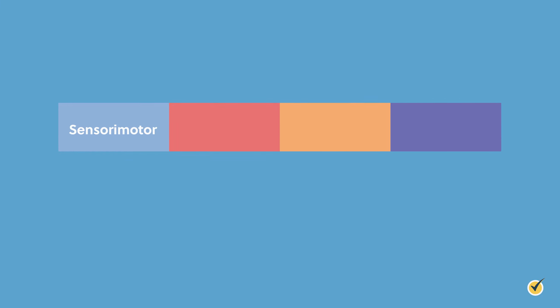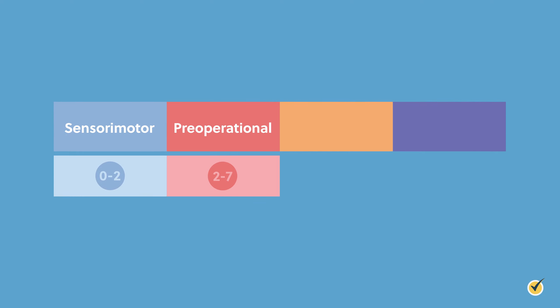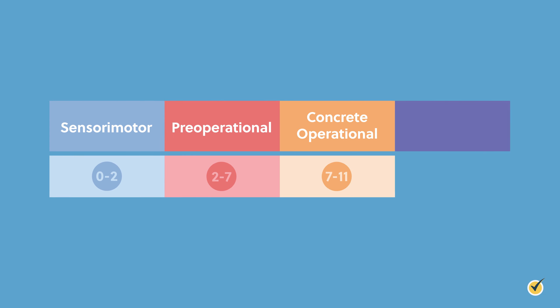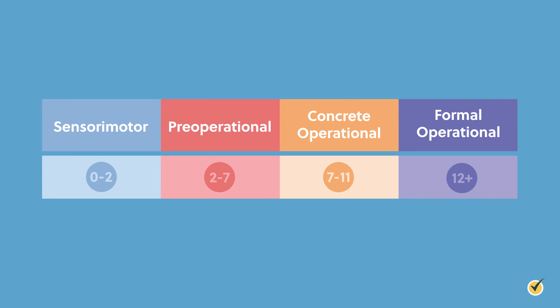Now that we've established who Piaget was, let's break down the previously mentioned four-step staircase. Piaget's cognitive development theory proposed that a child must progress through four stages of learning: Stage one, sensorimotor, from ages zero to two; Stage two, pre-operational, from ages two to seven; Stage three, concrete operational, from ages seven to eleven; and Stage four, formal operational, from ages twelve and above. These sequential four stages are the foundation for the child's methodical building and processing of information while making connections with their surroundings.